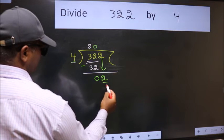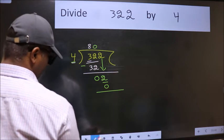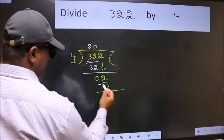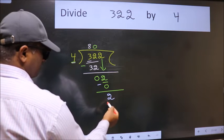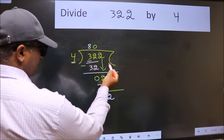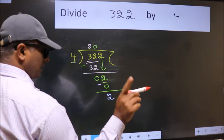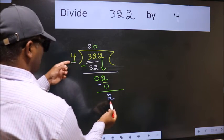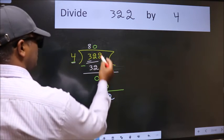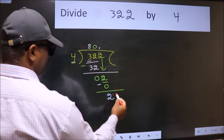So 4 into 0 is 0. Now we subtract and get 2. Over here, we did not bring any number down, and 2 is smaller than 4. So now we can put a dot and take 0.